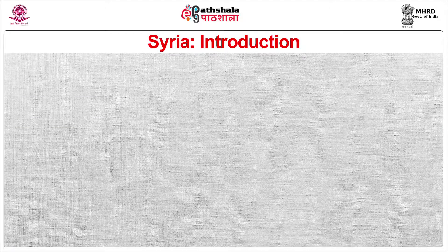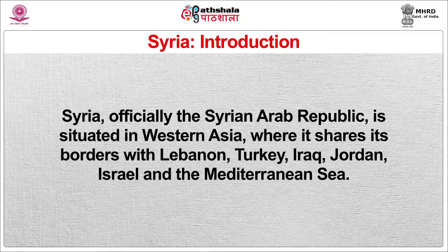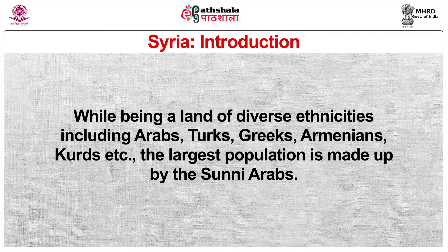Let us begin with Syria. Syria is officially known as the Syrian Arab Republic. It is located in Western Asia, sharing borders with Lebanon, Turkey, Iraq, Jordan, Israel, and the Mediterranean Sea. While being a land of diverse ethnicity including Arabs, Turks, Greeks, Armenians, Kurds, etc., the largest population of Syria is made up of Sunni Arabs.